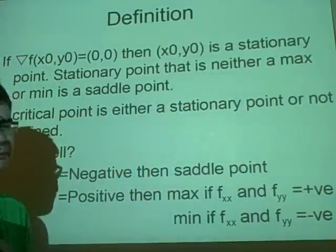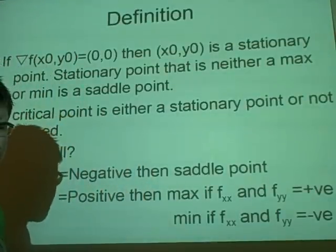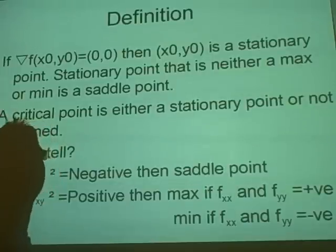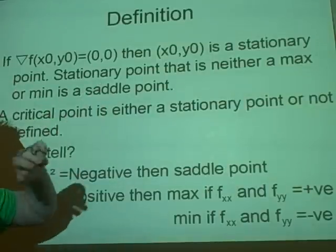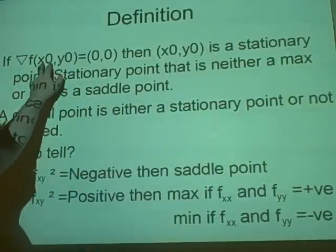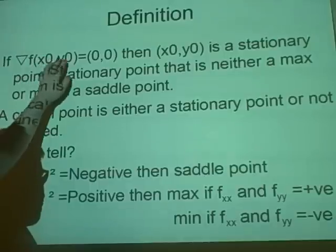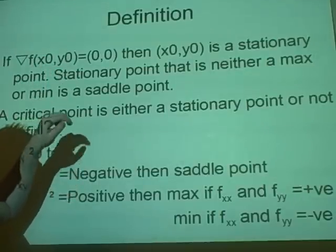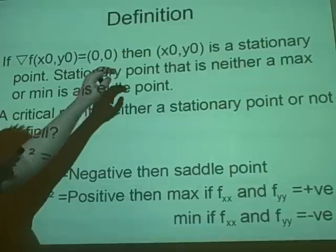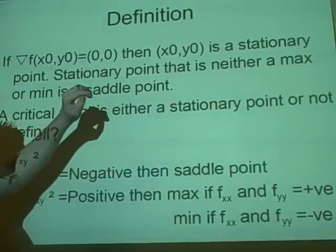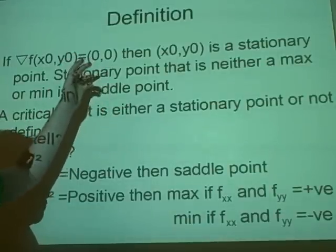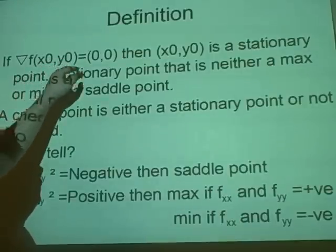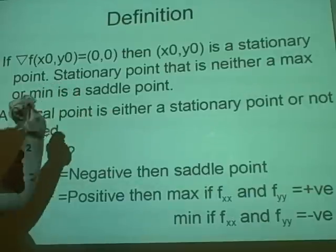Right, first off, stationary points. Now you should remember this, this is simple stuff. So if we have grad f and we let these two functions that we get left with are partial derivatives, if we make them equal to zero, then whatever the values are, so here I've just said if the x and the y equals zero, then it's a stationary point.